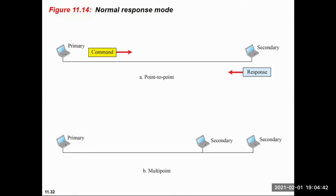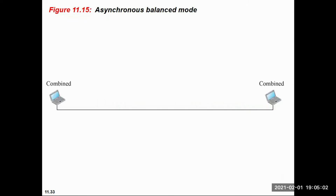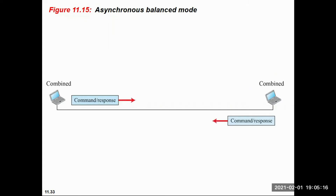In the multipoint case, a primary station and multiple secondary stations are present. The primary station sends commands and all secondary stations respond. In the combined station configuration, stations can send commands or responses depending upon the situation.